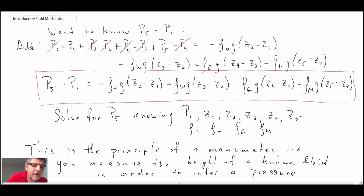This is the principle behind which a manometer works. The principle of a manometer, it's pretty simple. What you do is you measure the height of a column of fluid. That means you need to know the density of the fluid and you need to know where the interfaces are. By doing that, you can then infer a pressure that you are trying to measure.